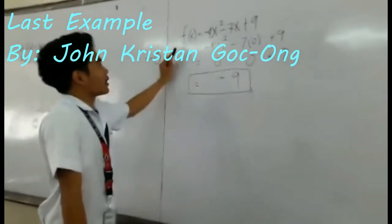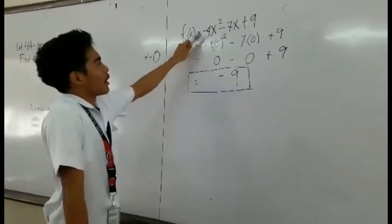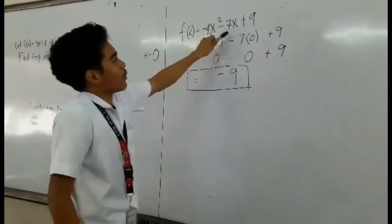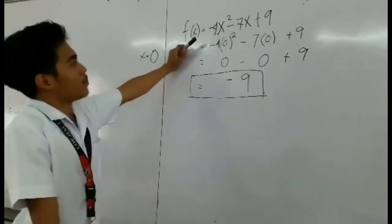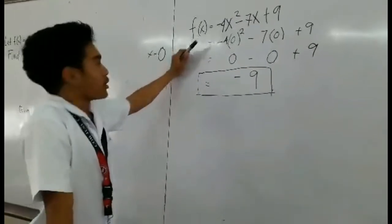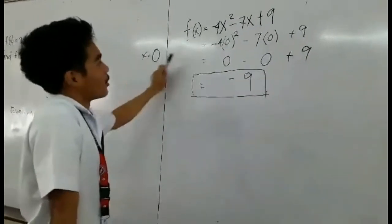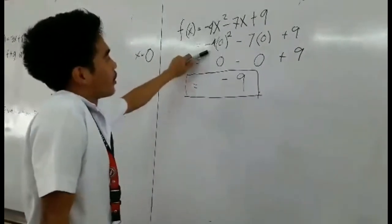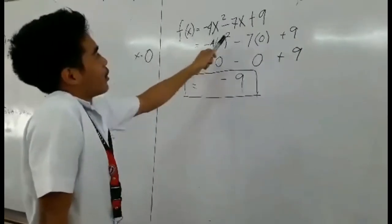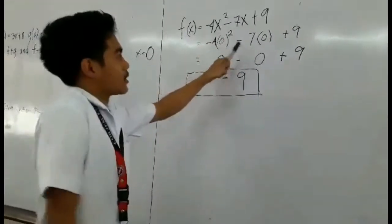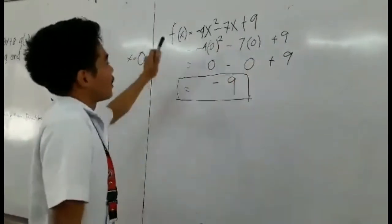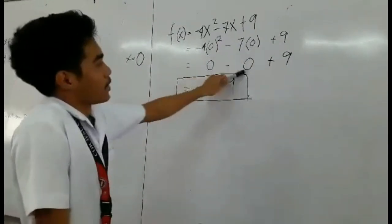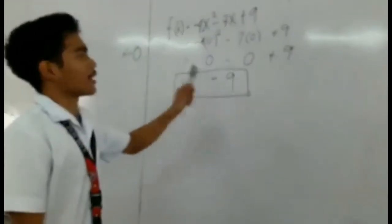For example, the function f(x) is equal to 4x squared minus 7x plus 9. So we're going to just replace x to 0. That's why we have f(0) is equal to 0 squared minus 7 times 0 plus 9. That's why it equals 0 minus 0 plus 9. That's why the answer is 9.